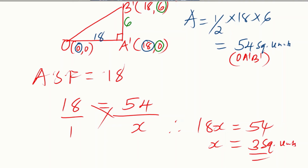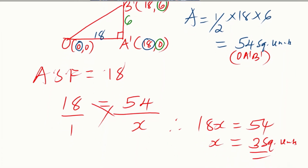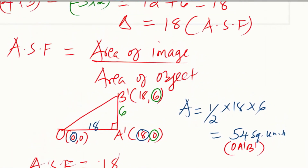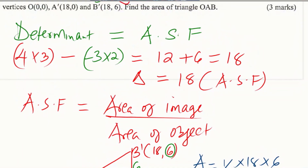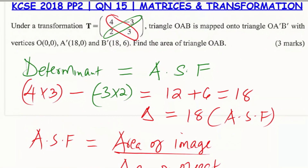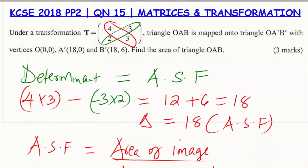Therefore, the area of the object triangle OAB is 3 square units. This is obtained by applying the relationship between the matrix of transformation and the area scale factor, where the determinant of the matrix equals the area scale factor.